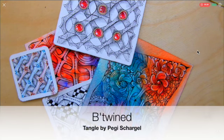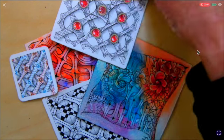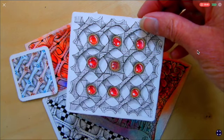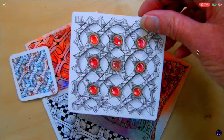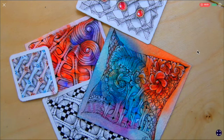It's called Betwined by Peggy Schargel and I love it because it looks so incredibly complicated. If I take a look at this, I don't even know if I could follow what I'm doing there. But if you break this down just like all Zentangles, you can do this one step at a time and it's just magical.